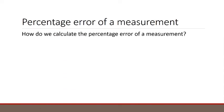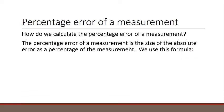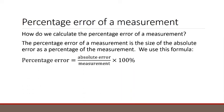How do we calculate the percentage error of a measurement? The percentage error is the size of the absolute error as a percentage of the measurement. We use this formula: percentage error equals absolute error over measurement times 100, with a percent sign.